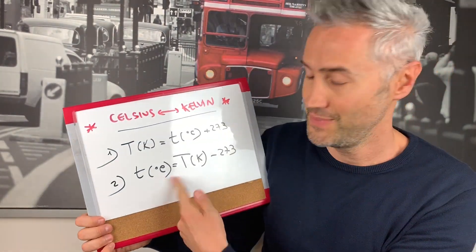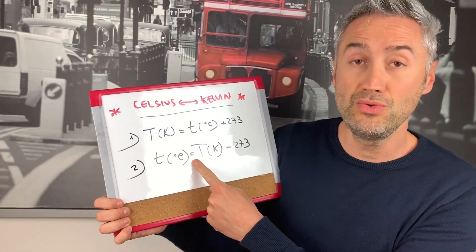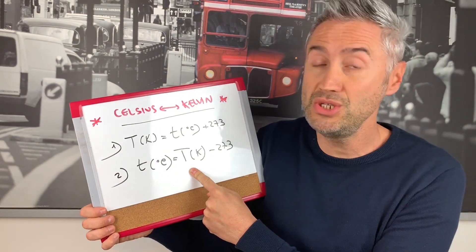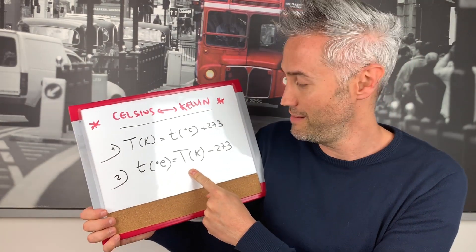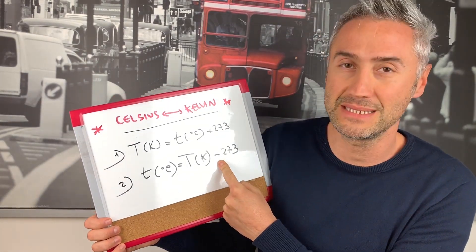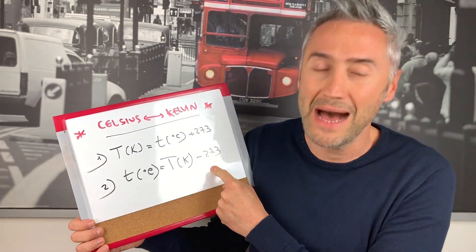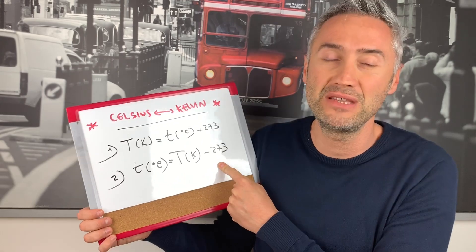The second formula: Celsius equals whatever your degrees are in Kelvin minus 273.